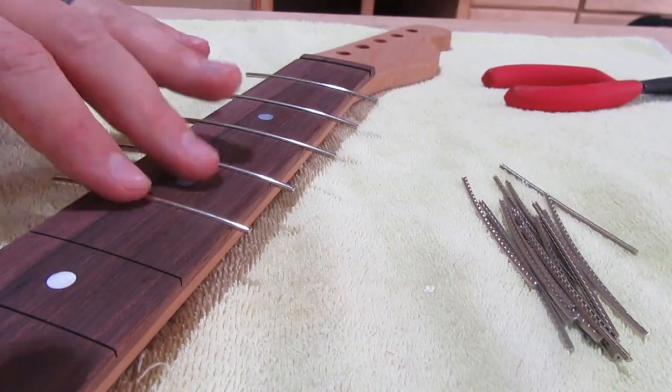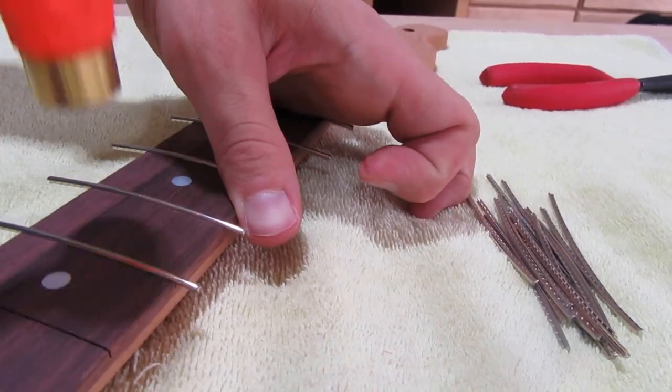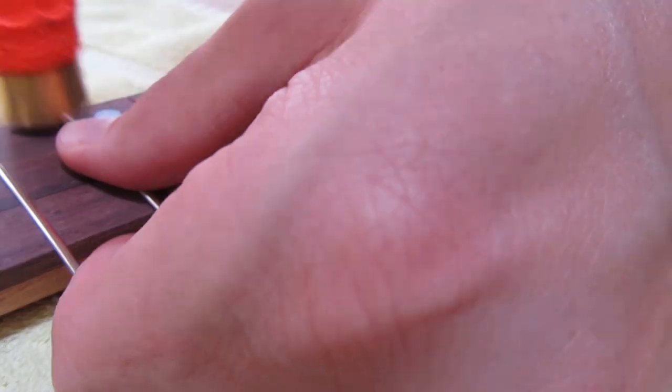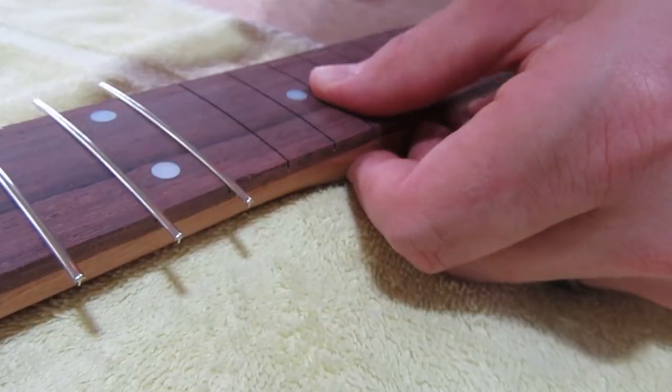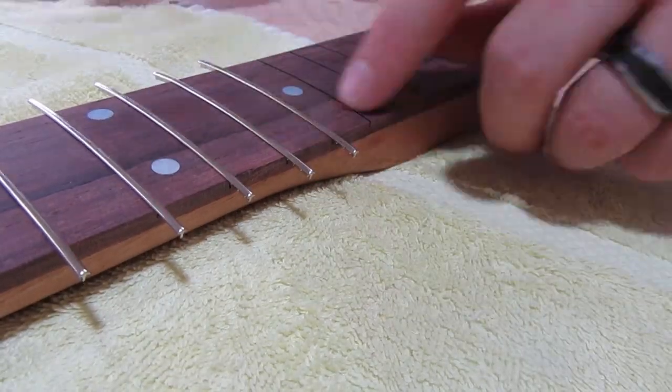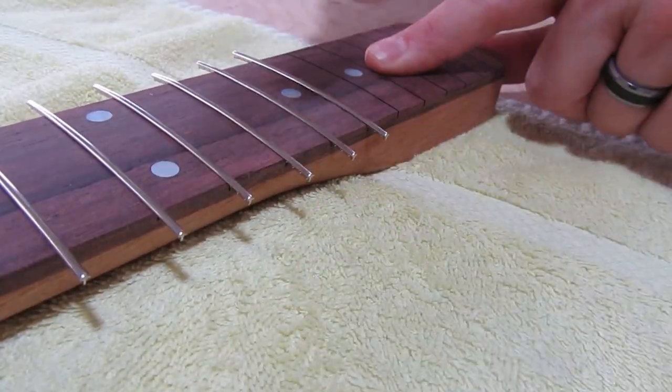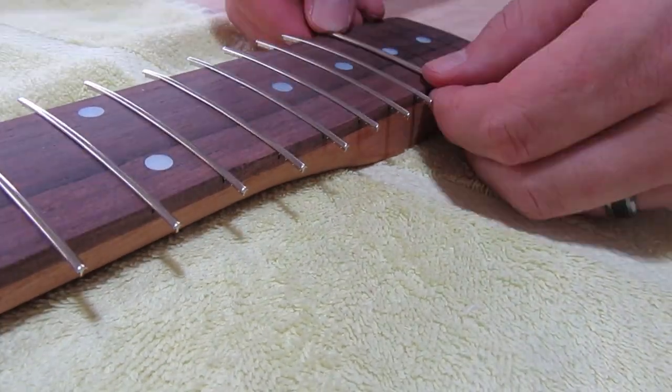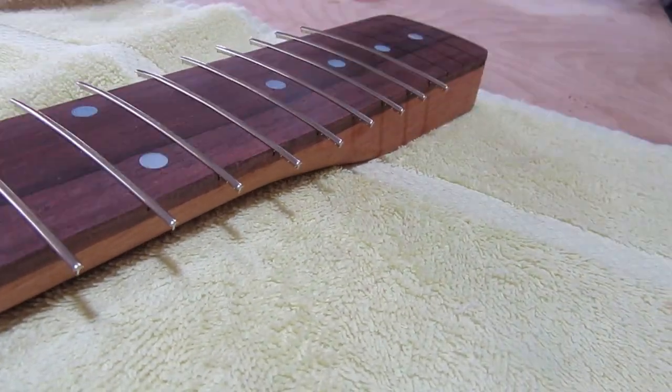This is pretty simple process. You just want to support the neck and then hammer in on the left and right side of each fret before you go to the middle and that's so that the ends don't pop out. It's pretty easy once you do one or two. So I suggest that you practice it if you've never done it before, but really it's not complicated.